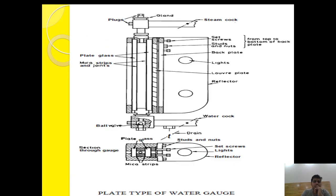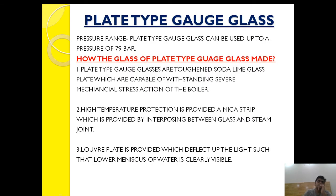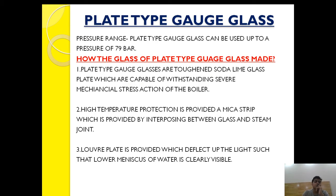So let's see the plate type gauge glass first. The pressure range of the plate type gauge glass can be used up to 79 bar. Now the second question that comes to mind is: how is it constructed such that it can be used at such a high pressure?